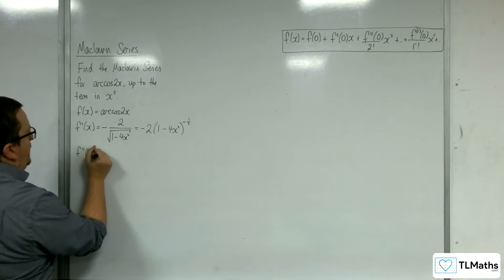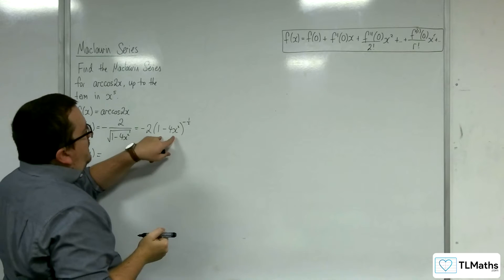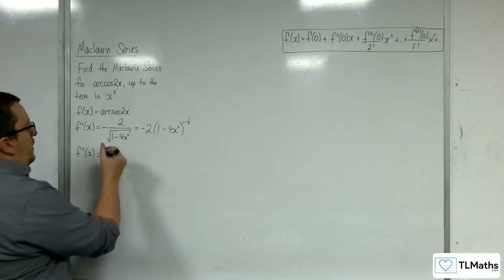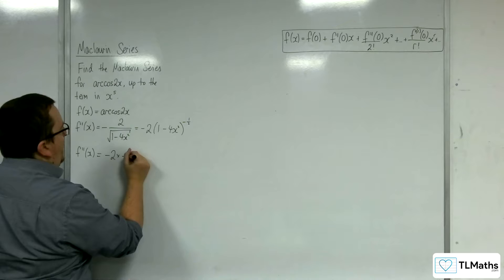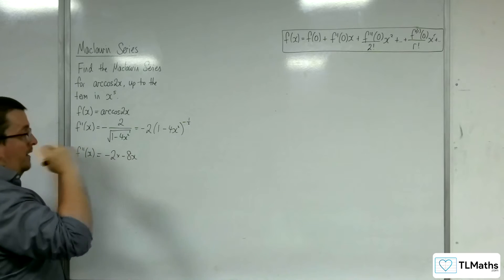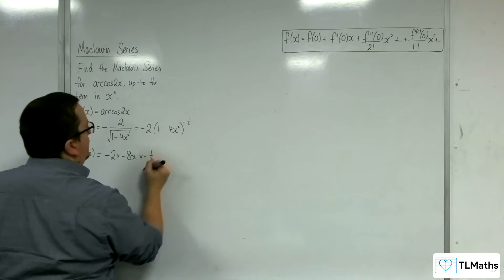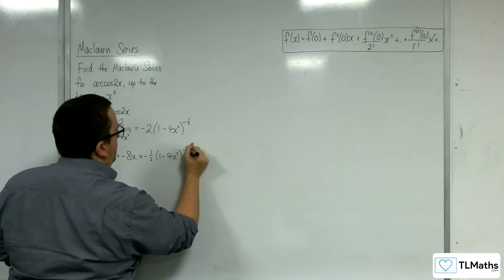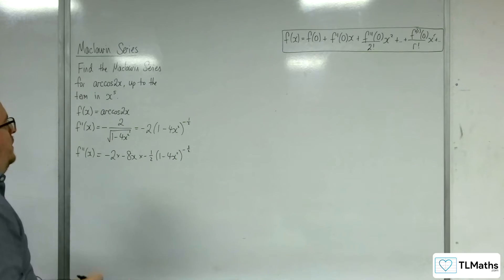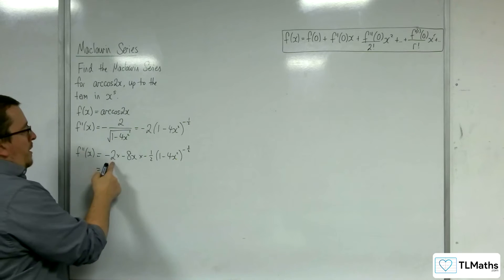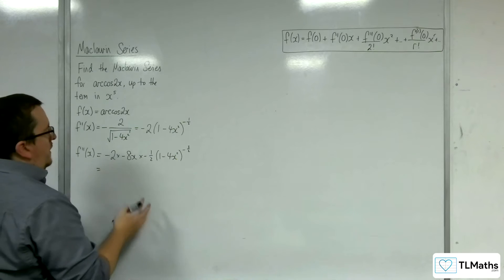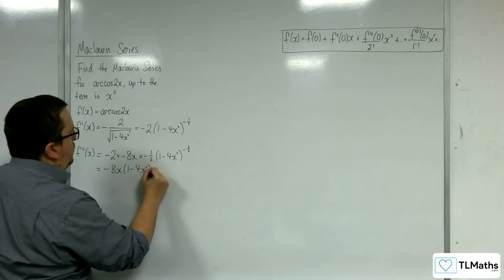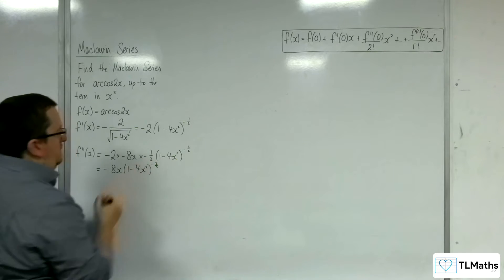For f double prime of x: the derivative of the inside is minus 8x. That multiplies with the minus 2 already there. The minus one half comes down to the front, and we take 1 from the power. Simplifying: minus 2 times minus one half is 1, so we get minus 8x times (1 minus 4x squared) to the minus three halves.